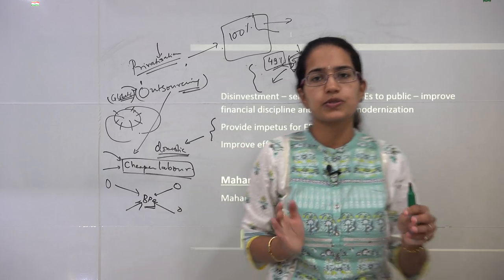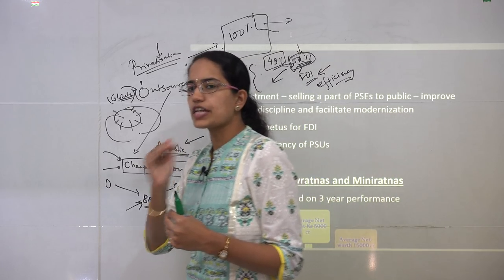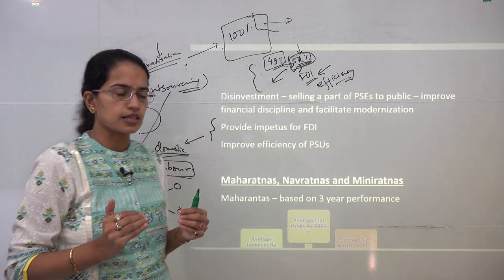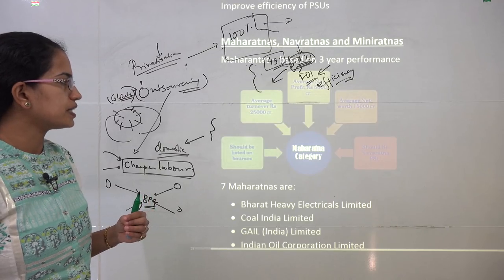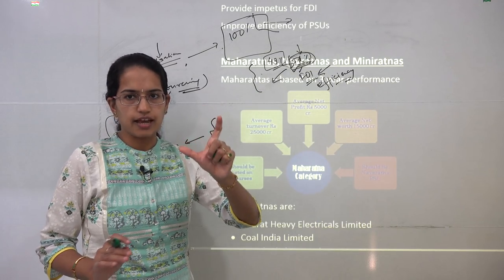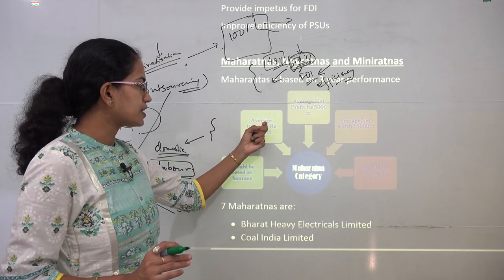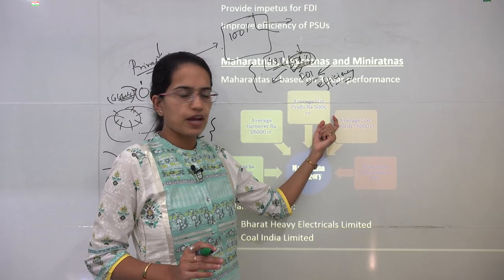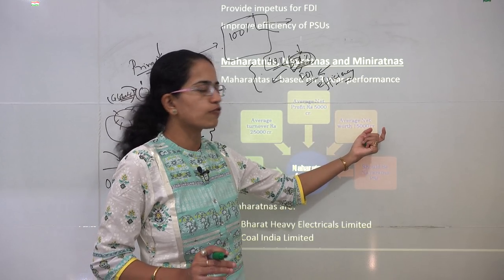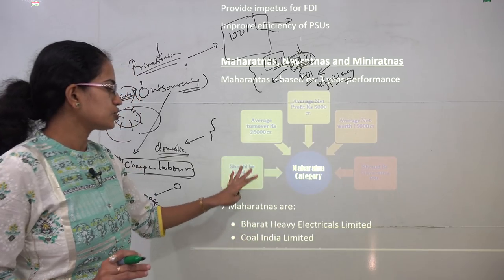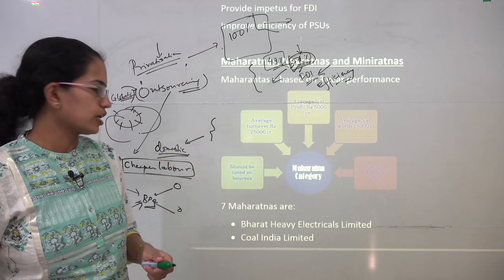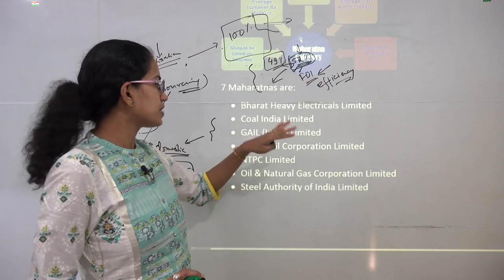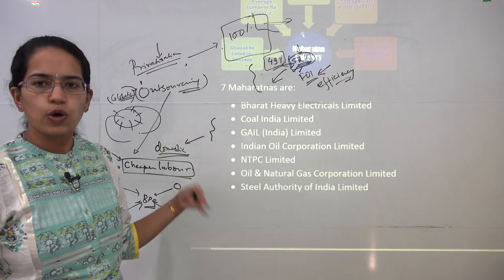Now we touch on three important concepts not covered in detail in NCERT but very important: Maharatna, Miniratna, and Navratna. Maharatna companies, based on a three-year average performance, must have an average turnover of more than ₹25,000 crores, net profit of more than ₹5,000 crores, and net worth of more than ₹15,000 crores, and must be listed on a stock exchange. There are seven Maharatna companies, including BHEL, GAIL, Indian Oil Corporation, NTPC, and ONGC.